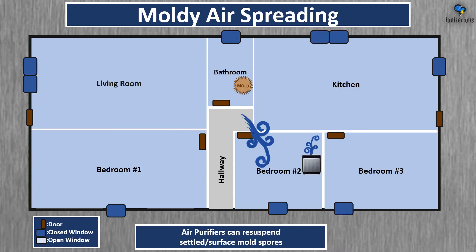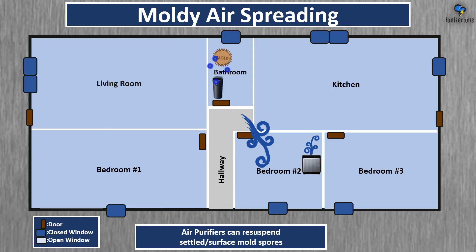If you don't have a great setup, you can actually make your air worse. For example, if bedroom 2 had an air purifier, it could cause mold on the bathroom wall to become airborne — drawing that mold spore into your room for you to inhale. To overcome this, you could put an ionizer in the bathroom so there's no mold to begin with.